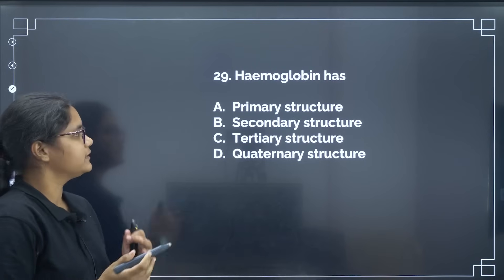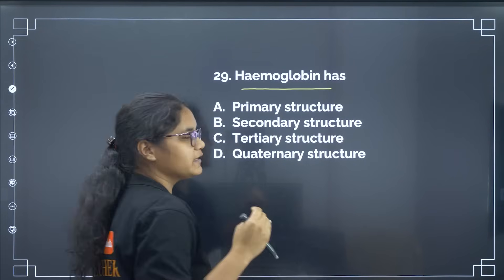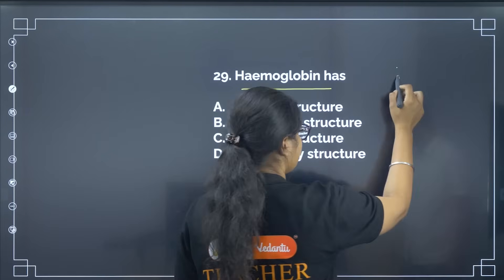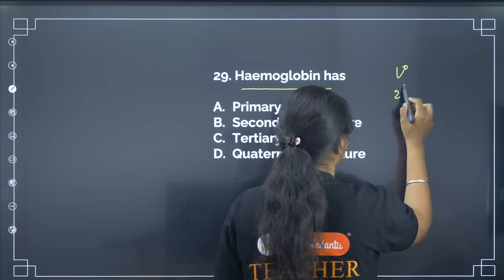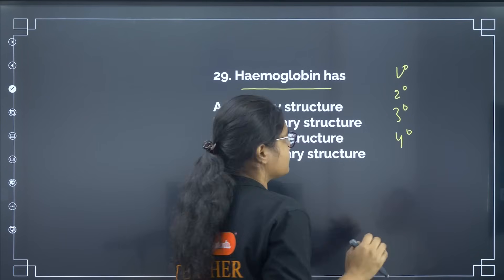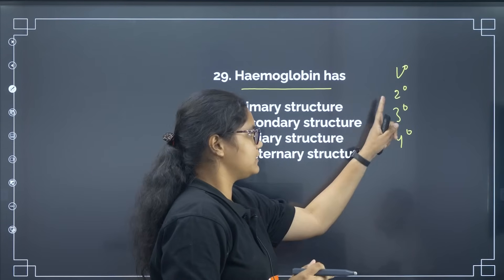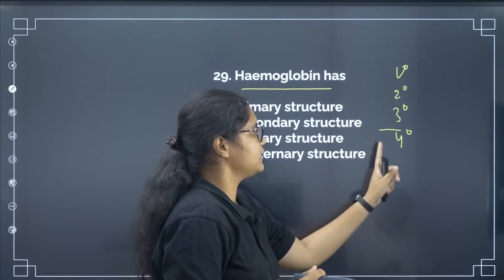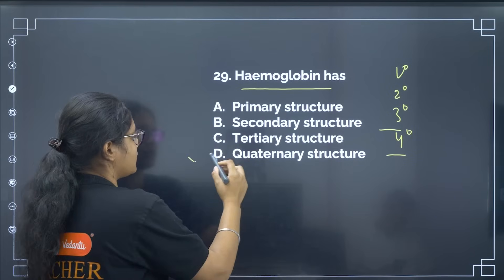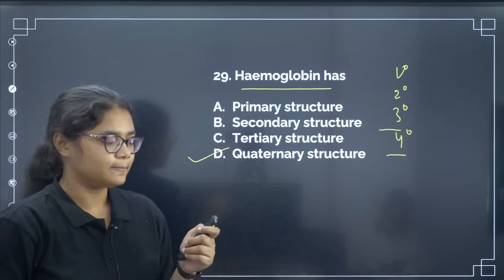Hemoglobin has which type of protein structure? Proteins have primary, secondary, tertiary, and quaternary structures — further folding gives each successive level. Hemoglobin is an example of a quaternary structure. The correct answer is option number D.